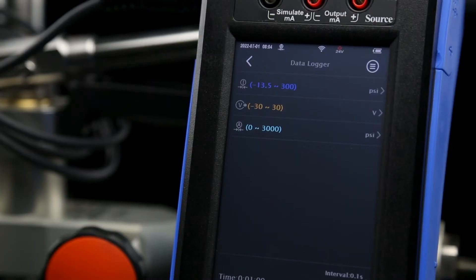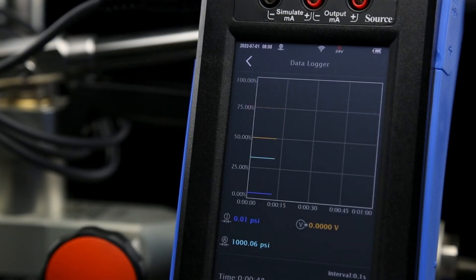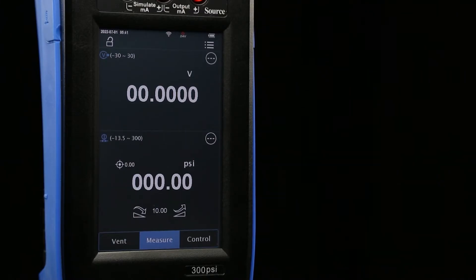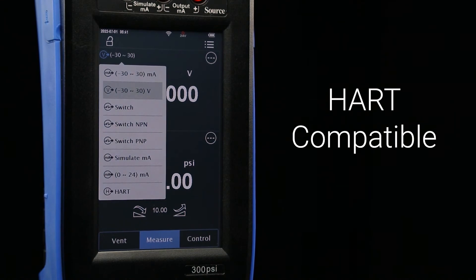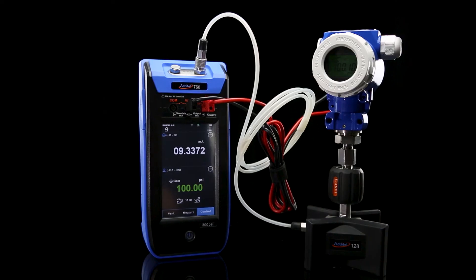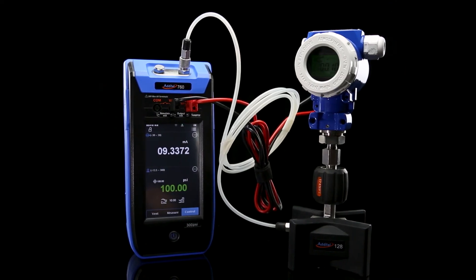Using the internal data logging feature, both inputs can be recorded simultaneously, along with the internally generated pressure and electrical channels. The 760 also features HART communications and a 24-volt power output for the quick calibration of transmitters and other compatible devices.